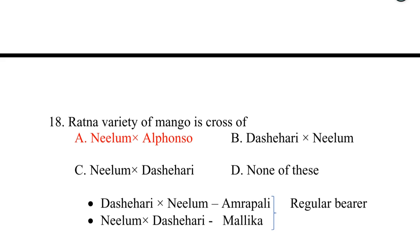The Ratna variety of mango is a cross of Neelam × Alphonso. Dashehari × Neelam gives Amrapali. Neelam × Dashehari gives Mallika. Both Amrapali and Mallika are regular bearers.